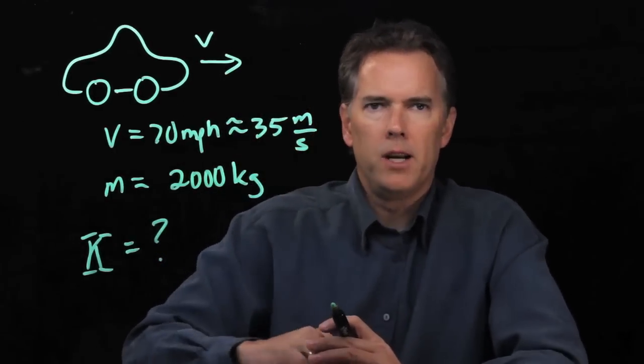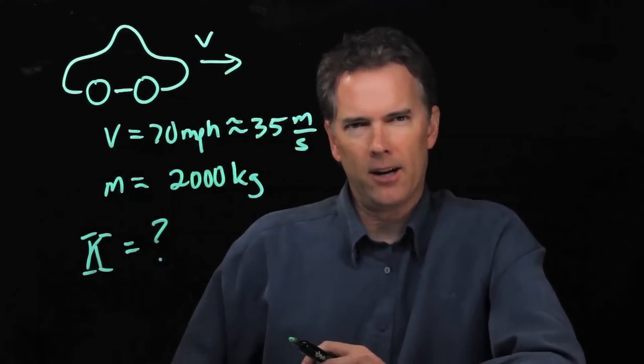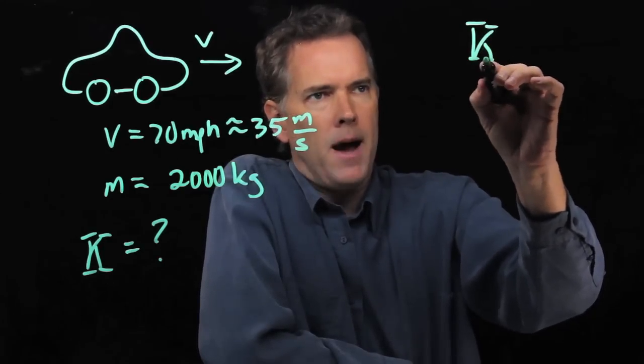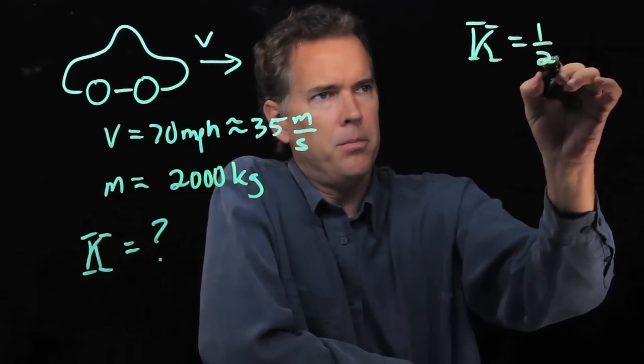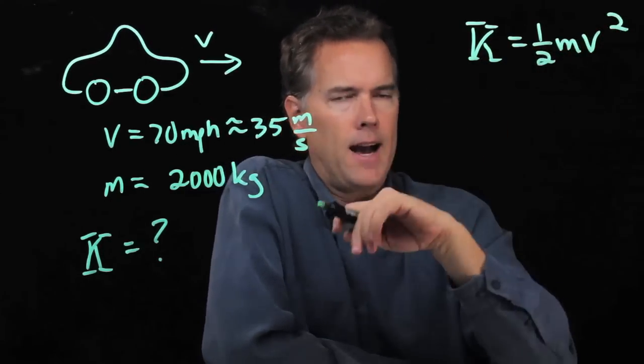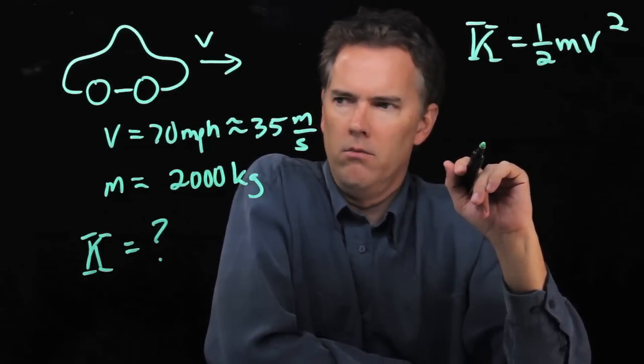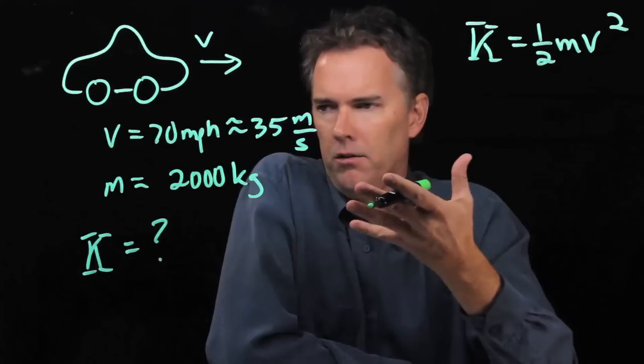So we need to go back to our formula for kinetic energy. We know that kinetic energy depends on the mass but also on the speed, and in fact it is just that: one half mv squared. Do we have everything we need? It looks like it.